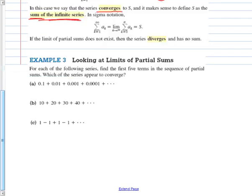We can find a sum when they converge to a value. If it's a diverging one, there's no sum to that. Quick example. We have some examples right here. For each of the following series, find the first five terms in the sequence of the partial sums. So it's a partial sum because it's only a part of an infinite one. Then which of these appear to be converging?